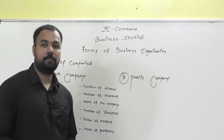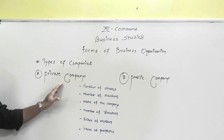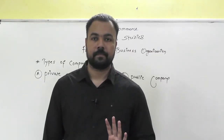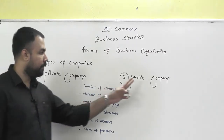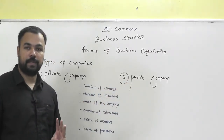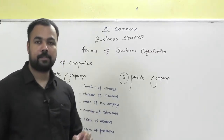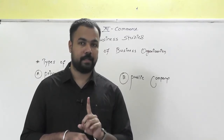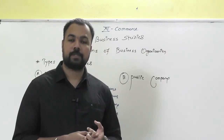The number of directors: if you have a private company, you must have a minimum of two directors. If you have a public limited company, you must have a minimum of three directors. And the maximum number of directors you can appoint is 15 in both cases. So in private company, minimum directors: two. In public limited company, minimum directors: three. Maximum directors in both: 15.